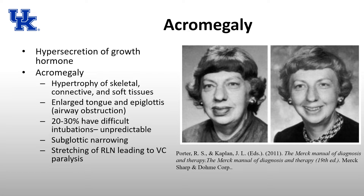A note on acromegaly: this is due to hypersecretion of growth hormone. On the right, you can see pictures of a woman taken 11 years apart. She developed acromegaly — excess secretion of growth hormone — and you can see the hypertrophy of her soft tissue and the distortion of her bony prominences. It's pretty significant how much the changes happened in 11 years.